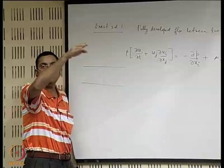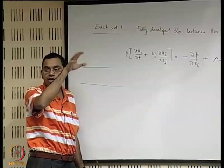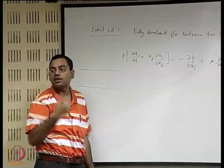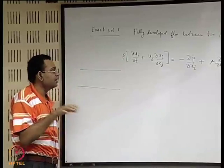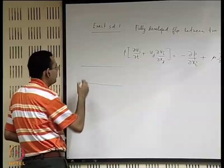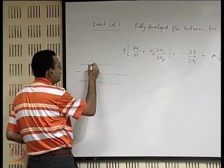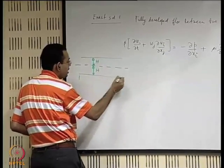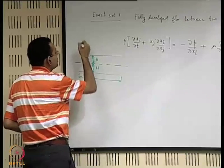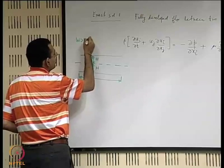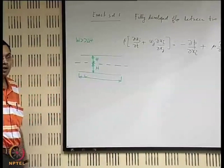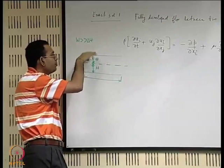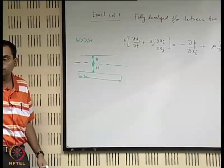Why? Because if the third dimension is very large, gradients in that dimension are very small — gradients are basically change in variable divided by the length over which the change takes place. If the length scale in the third dimension is very large, then characteristic changes in terms of gradients are very small and the effect of the third dimension may be neglected. Let us say the center line of the channel is here, this height is h, this height is h, the length of each plate is l, and the width is w such that w is much much greater than 2h.